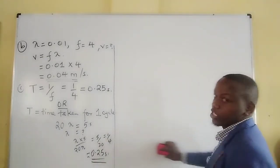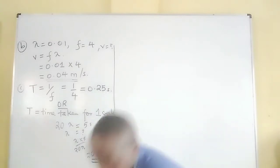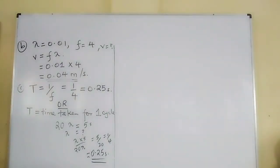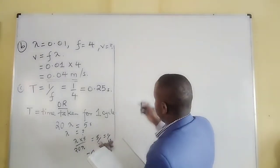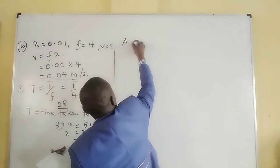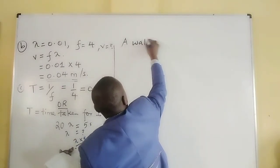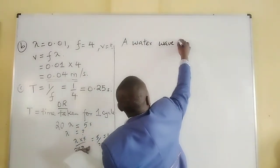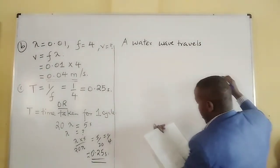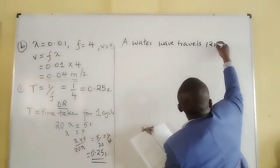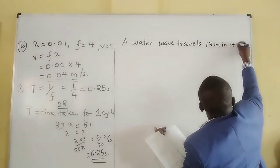In the end, you will integrate the question just the way we have gone through that one. I'm sure you are going to understand something. So we are told that a water wave travels 12 meters in 4 seconds.